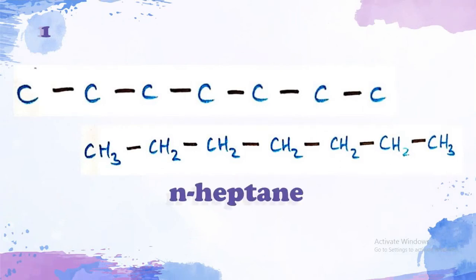This chain is called n-heptane. N means normal. N-heptane means that there are 7 carbon atoms in the main chain and they were all tied together with single bonds only.